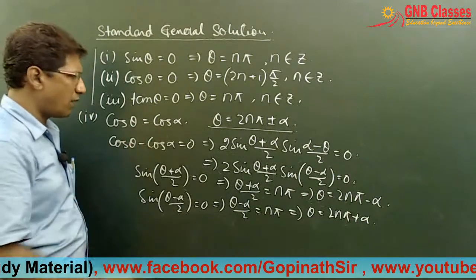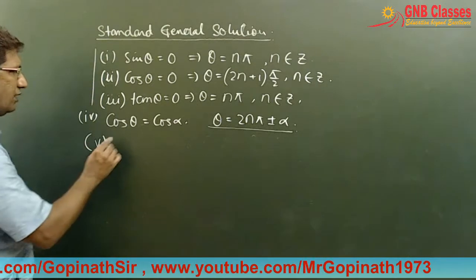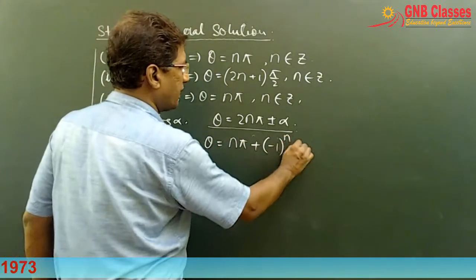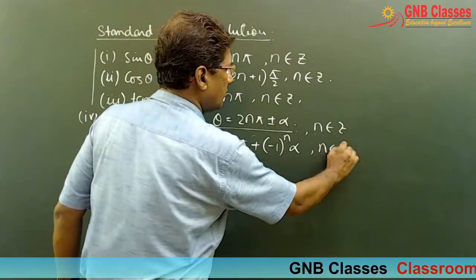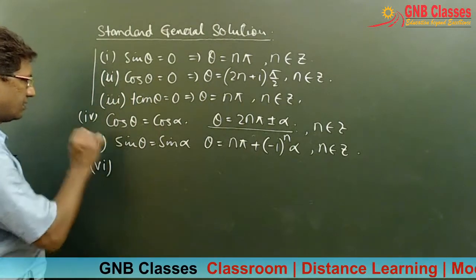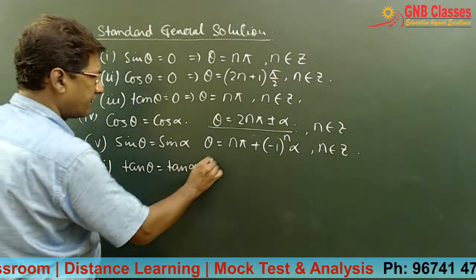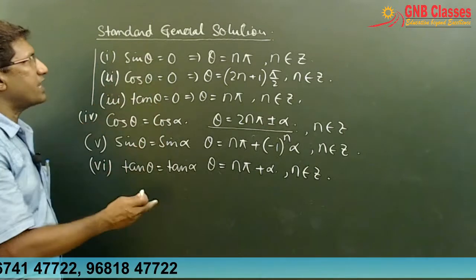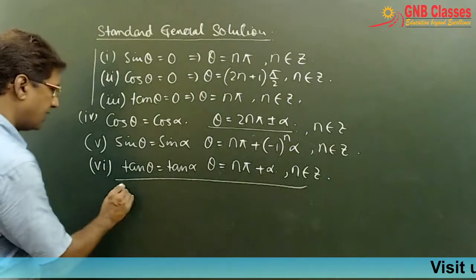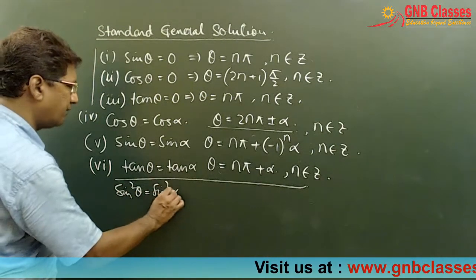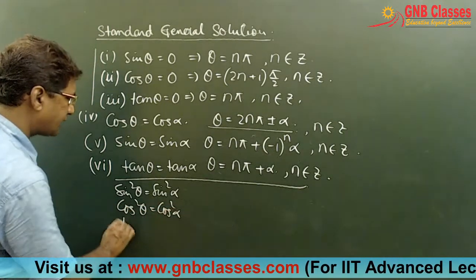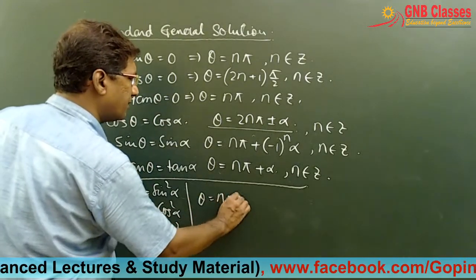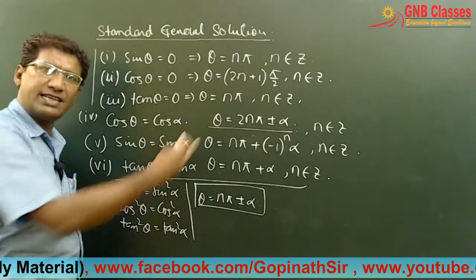Let me write the other two formulas as well. The fifth one: if sin θ = sin α, then θ = nπ + (−1)ⁿ α, where n belongs to integers. Sixth: if tan θ = tan α, then θ = nπ + α, where n belongs to integers. The other set is: if sin²θ = sin²α, or cos²θ = cos²α, or tan²θ = tan²α, in all those cases θ = nπ ± α. For proofs, refer to any textbook.